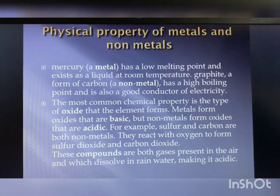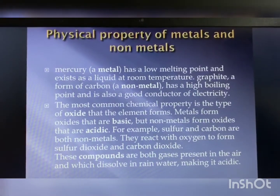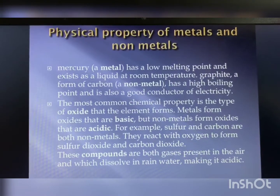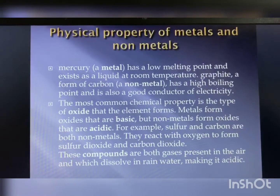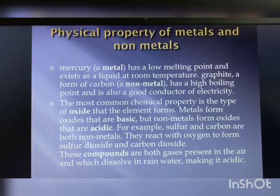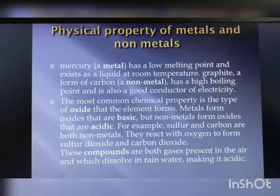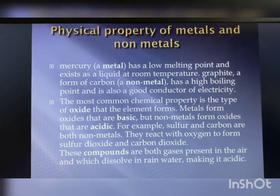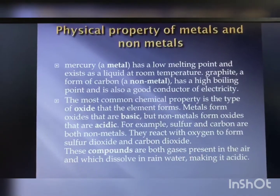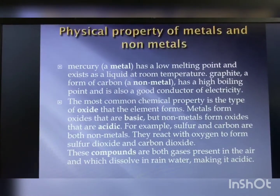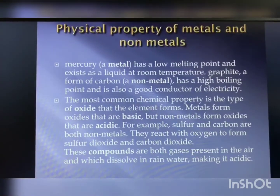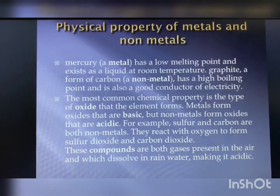Mercury is a metal having a low melting point and exists as a liquid at room temperature. Graphite, a form of carbon, is a nonmetal that has a high boiling point and is also a good conductor of electricity. These are exceptional elements that do not fit neatly into the typical categories of metals and nonmetals.